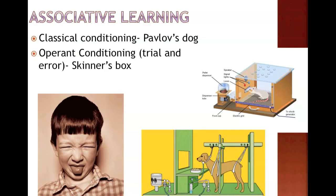You've also got operant conditioning, which is another type of associative learning. In operant conditioning, through trial and error, there are rewards and punishments. The animal learns what types of behaviors will be rewarded and what types will be punished. Our example of that is the experiment of Skinner's Box, and you can see a diagram of that over on the right.